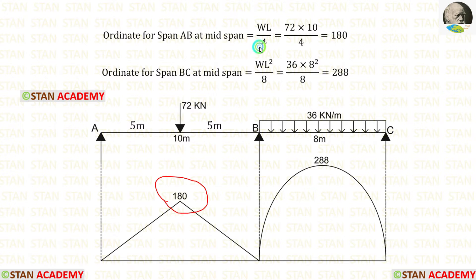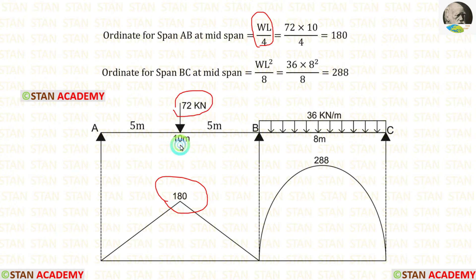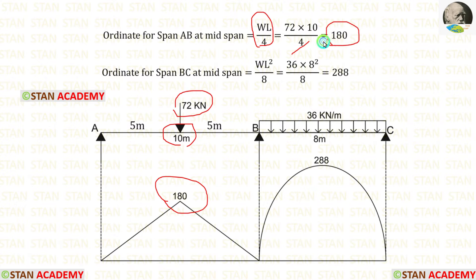The formula to calculate the maximum bending moment is WL by 4. Here, W is 72 and L is 10. We can apply these in the formula. Finally, we are getting 180.